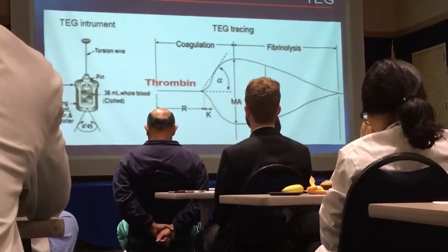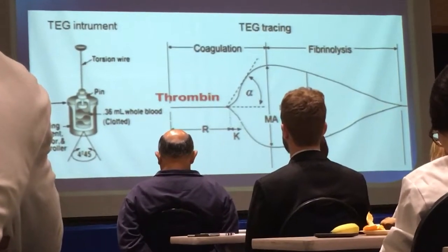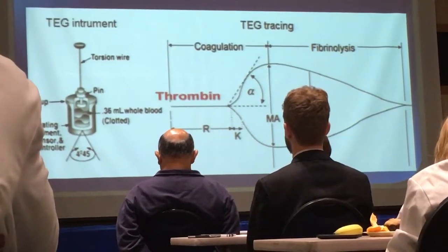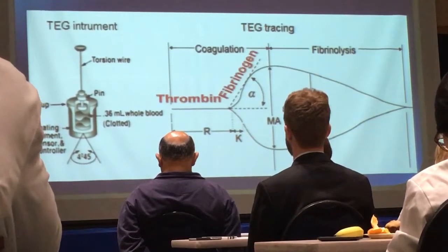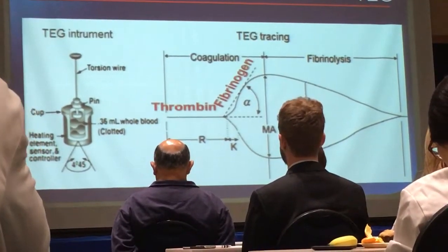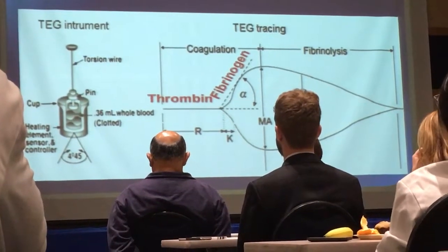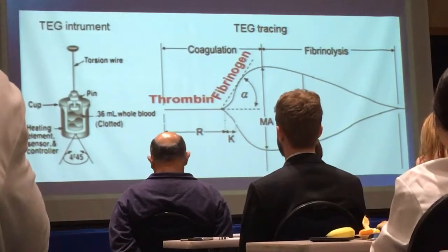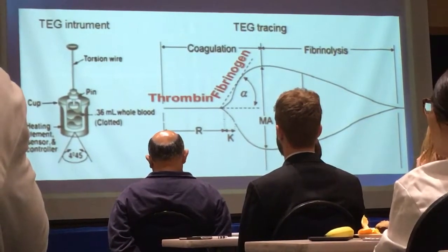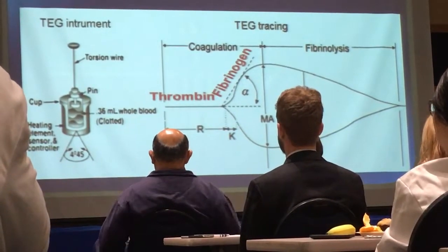This has to do with the generation of thrombin. If your R time is slow, long, or deficient, you need a source of thrombin — you need plasma. Once you make thrombin, you start to cleave fibrinogen to fibrin, and fibrin sticks your platelets together. It's that process that makes clot. It's that process that causes the curve to diverge, and that is known as the alpha angle, or the K time.